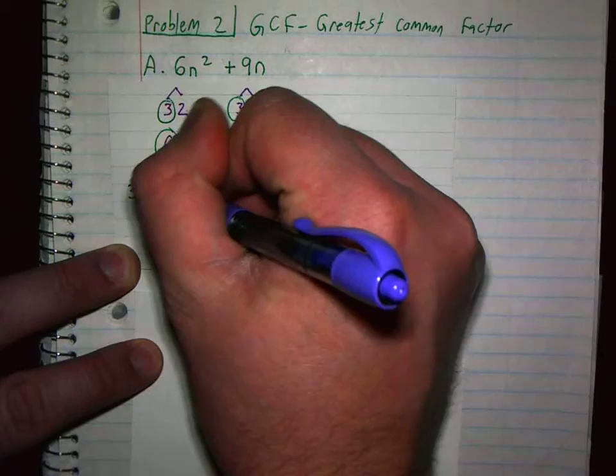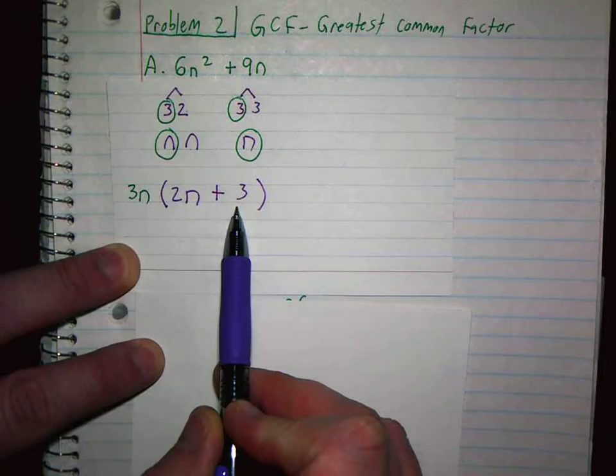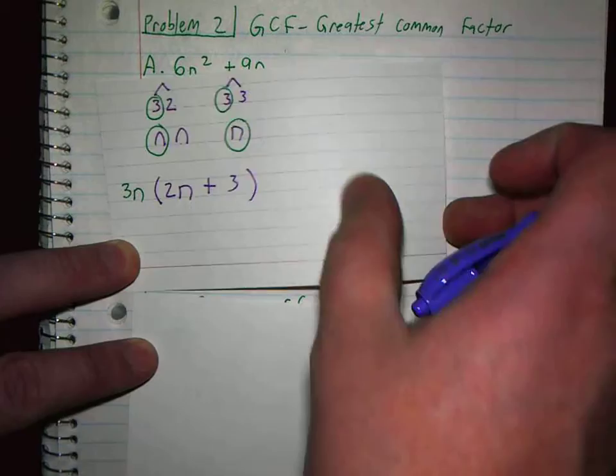And then I write down what's left over. And what's left over is a 2N plus, that's a plus sign, 3. Many of you I know could go to there. That is perfectly fine. I show this work in the middle because some of us in here do need that.